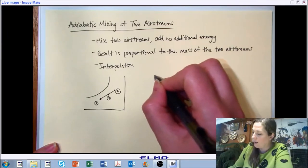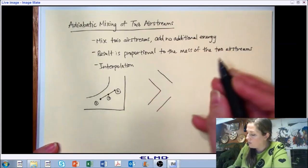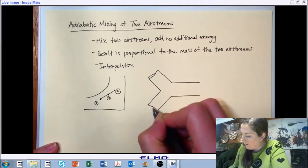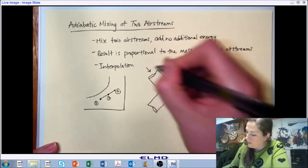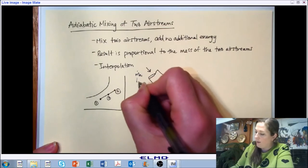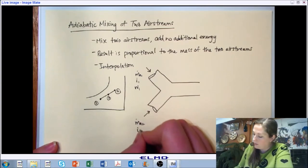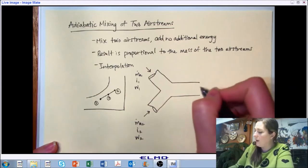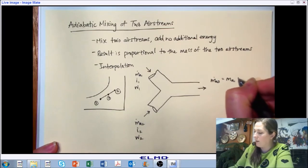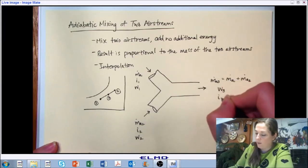And if we take a look at it we have essentially two airstreams coming together. Each of those airstreams having some properties associated with them. So we have a mass coming in, an enthalpy associated, and a humidity ratio. These seem to be our standards that we're going to choose. And then we have an amount of mass leaving. And due to conservation of mass, the mass leaving is the sum of the two that are coming in.